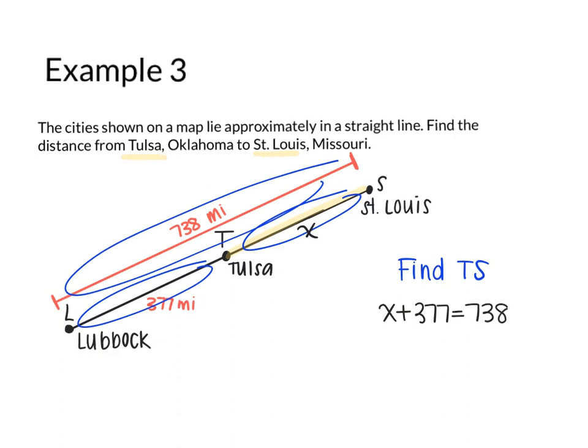And I can go ahead and solve that little equation. I'll subtract 377 from both sides. And I'll get X equals 361. In this case, I do want to label it miles because we do have a unit here. So it's 361 miles from Tulsa, Oklahoma to St. Louis. So make sure you go back and rewatch these if you need to. The biggest thing is that you know how to use the segment addition postulate, which says the two parts of the segment add up to be the whole.